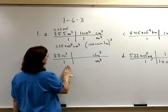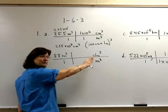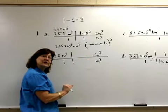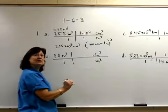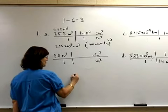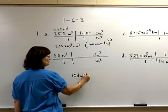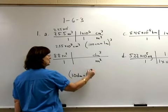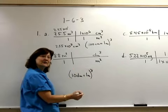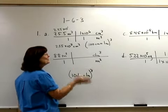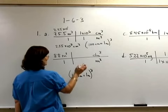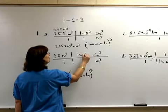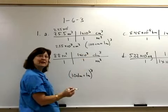In the second one, I'm going to decimeters cubed, so it's in the top of my conversion factor. I want to cancel meters cubed. I know that 10 decimeters equals 1 meter. When I cube 10, I get 1,000. When I cube 1, I get 1.